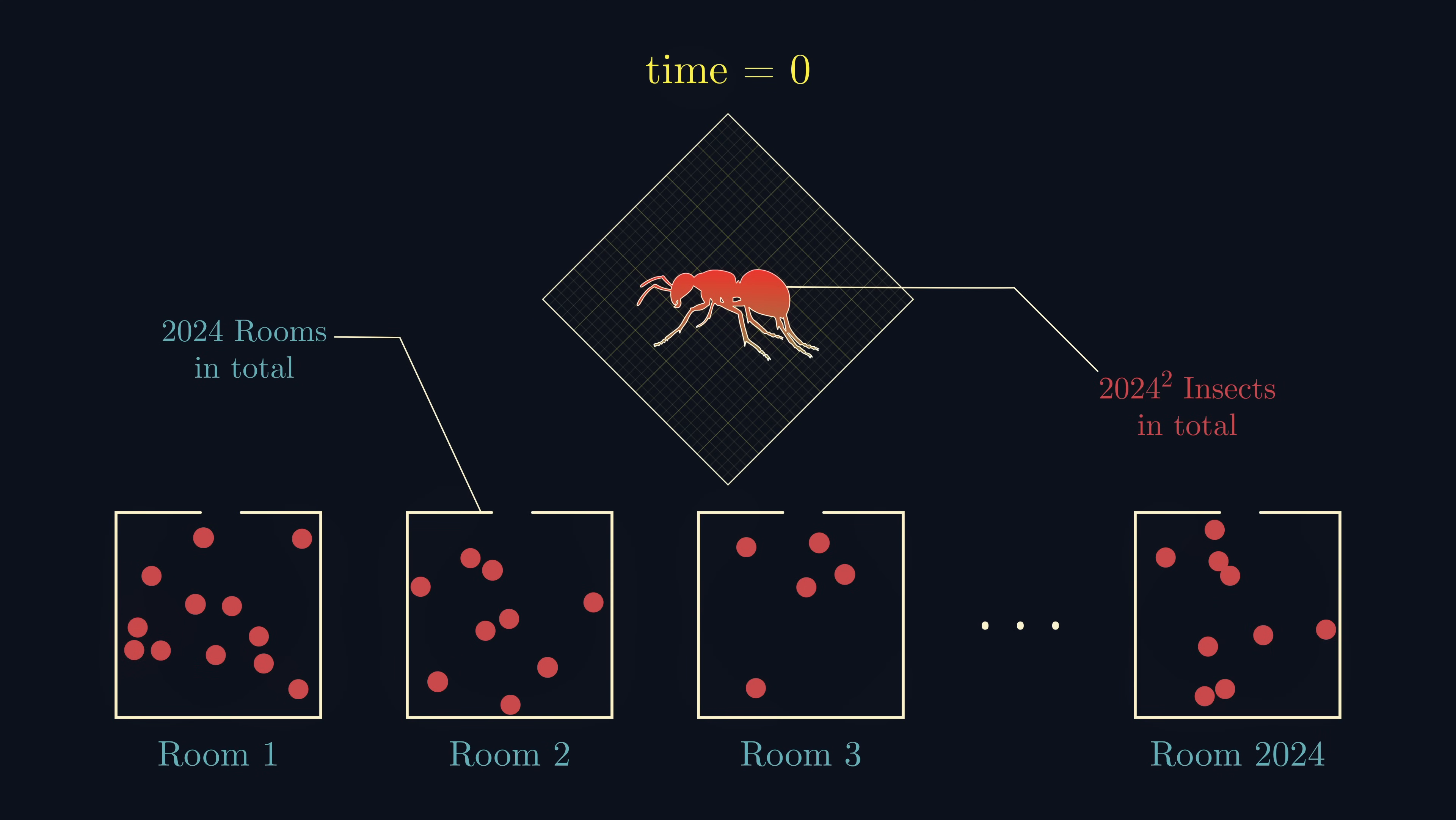Every second, one insect moves into a room with at least as many insects as their current room. So, for example, an insect could move from here to here, or from here to here. But not from here to here.